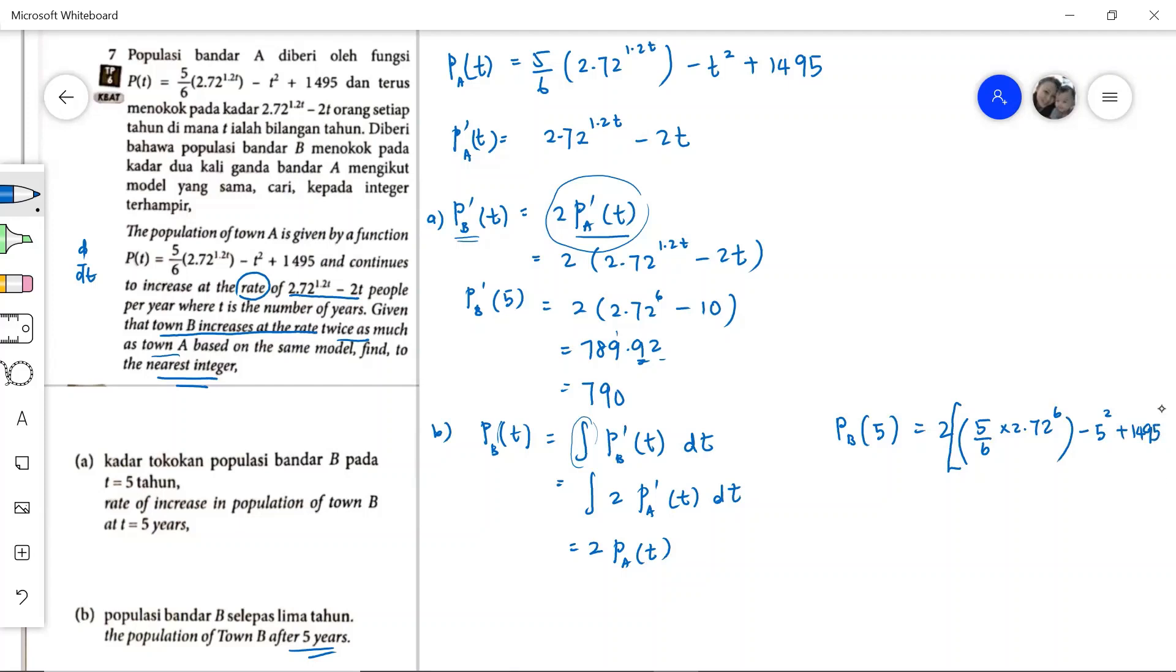We need to use the calculator. We have 3614.9. We have to leave our answer in the nearest integer. Drop the decimal and round up. We have 3615 people after five years. That is the population of town B.